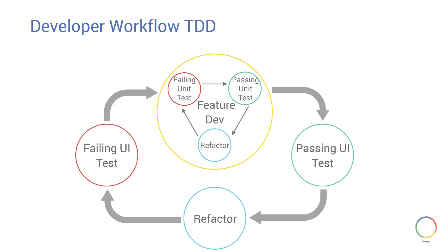How does this tie into the workflow and the Android ecosystem? We start with a large outer iteration driven by a UI test, which drives the whole feature development. Within that larger iteration, there's a series of smaller iterations concerned with developing the units required to satisfy that complete feature. At the end of the larger iteration, those completed units are assembled back together, making the UI test pass, and your feature should be complete.